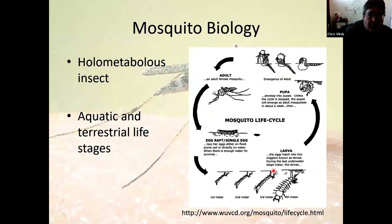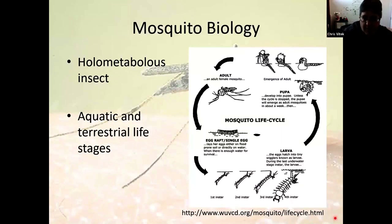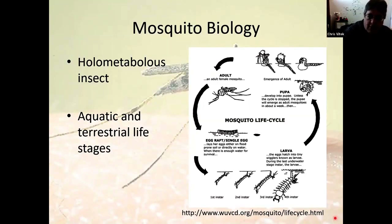Mosquitoes are biologically interesting because of their life cycle. They're holometabolic insects, meaning they have a complete life cycle with a pupal stage in between, which makes them a relatively evolutionarily advanced arthropod. They're also one of the few animals with both aquatic and terrestrial life cycle stages. This makes them easy to study — larvae can be manipulated very easily for experiments. From a control perspective, you can target the aquatic stages of eggs, larvae, or pupae, or try to control the adult terrestrial stage.